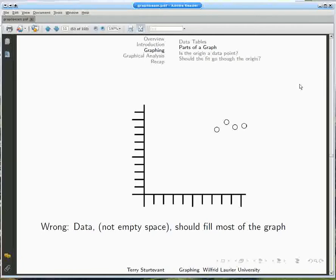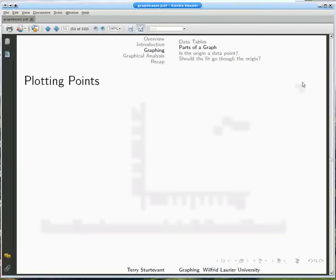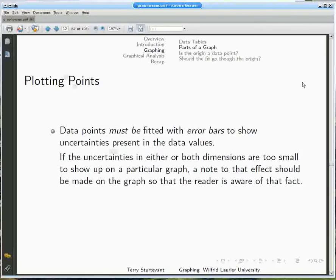The data in a graph should take up most of the available space. Plotted points need to include error bars, or a note explaining that the error bars are too small to show up if that's the case.